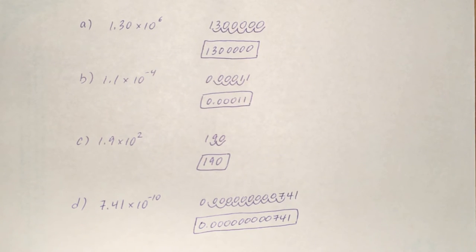And for D, 7.41 times 10 to the negative 10th, so what does that mean? We're moving to the left, but this time 10 spaces.